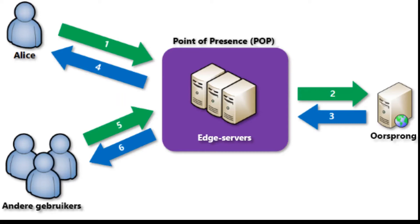If no edge servers in the POP have the file in their cache, the POP requests the file from the origin server. The origin server can be an Azure web app, an Azure cloud service, a storage account, or any publicly accessible web server like a WordPress website. The origin returns the file to an edge server in the POP, which caches the file and returns it to the original requester, Alice in this example. The file remains cached on the edge server in the POP until the time to live specified by its HTTP header expires.